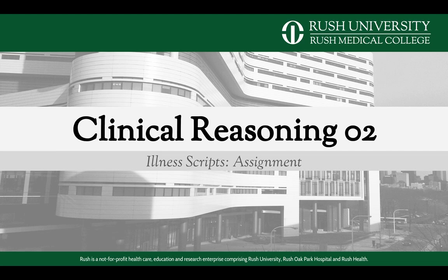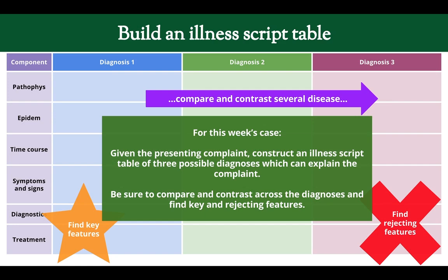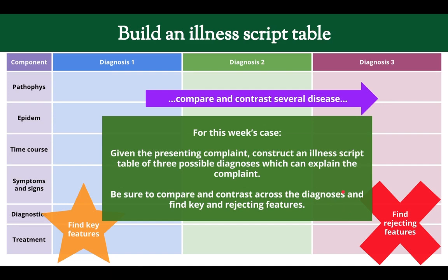For your clinical reasoning assignment this week, create an illness script table and pick three diagnoses that can explain the complaint in the case. Fill in the table with pathophysiology, epidemiology, time course, signs and symptoms, diagnostics, and treatment — fill it in the best you can. Then look for things that are common across all of them and things that are different. Look for key features, rejecting features, differentiating features, and non-differentiating features. The non-differentiating features are not very helpful, but note them. The really important things are the key features, the rejecting features, and the differentiating features. Construct this illness script table using what you learn about the diseases relevant to the case this week.